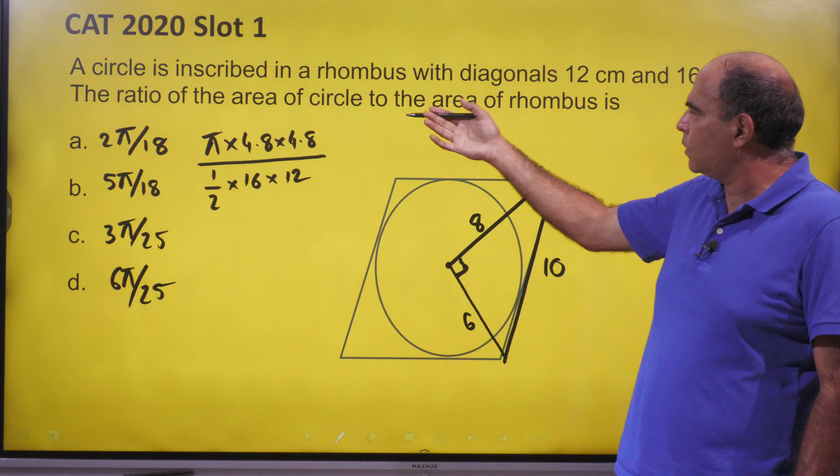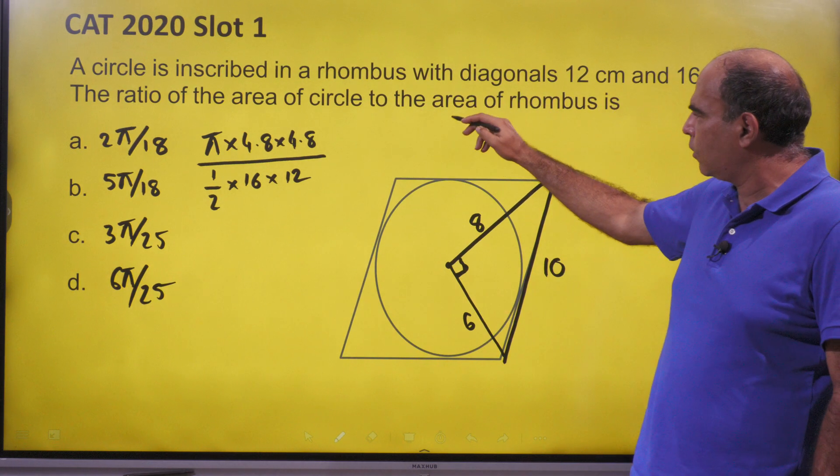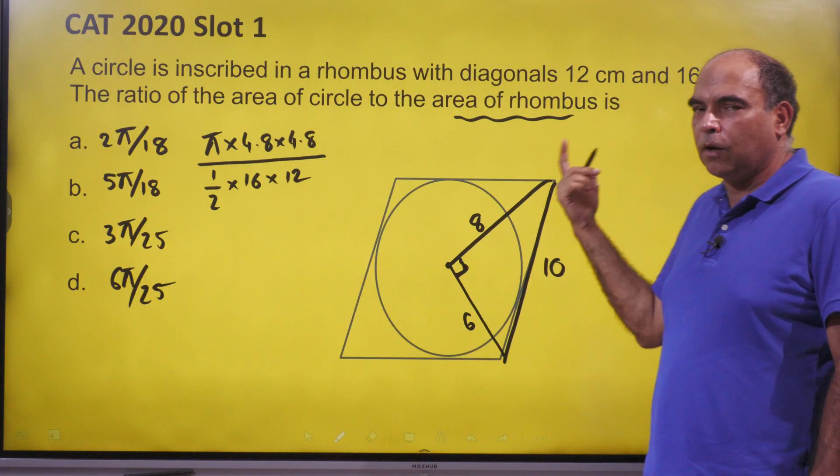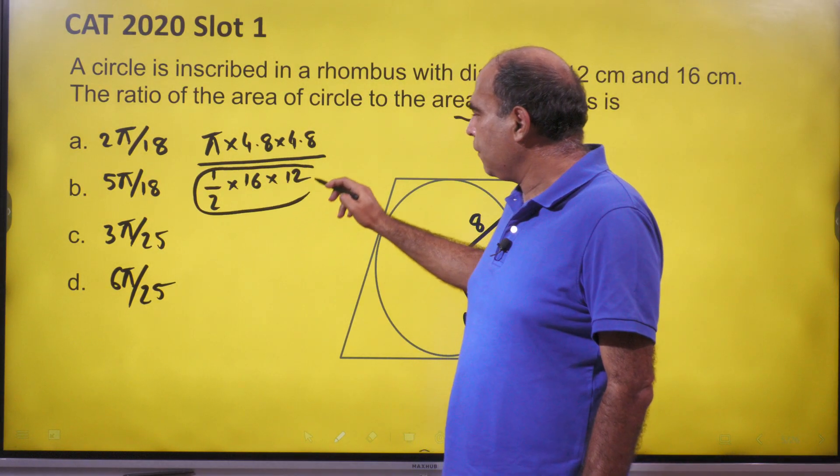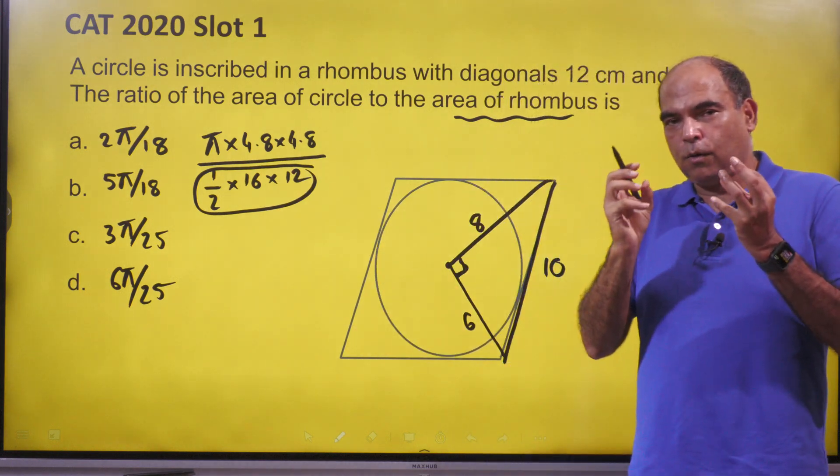The question asks for the ratio of the area of the circle to the area of the rhombus. We already know the area of the rhombus - it's half the product of diagonals. So that information is there. The focus is: how do I find the area of the circle?